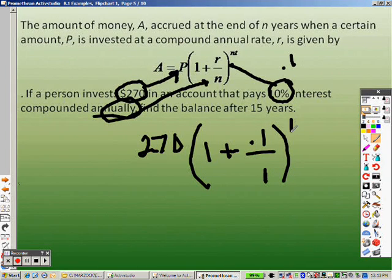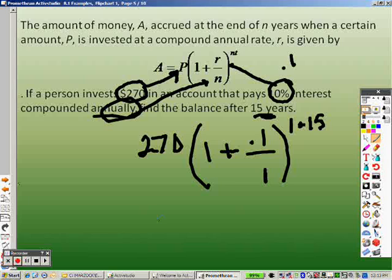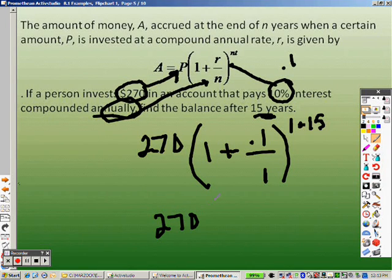1 up in the air because that's an n, so that's 1 times, and after 15 years, that is your t. So when we plug this in, we get 270 times, and 1 plus 0.1 is 1.1, and 1 times 15 is 15.